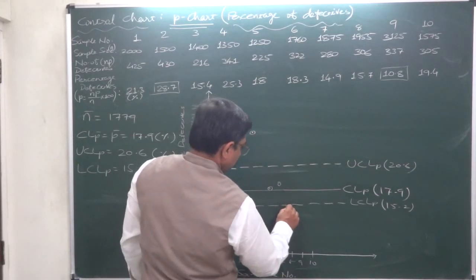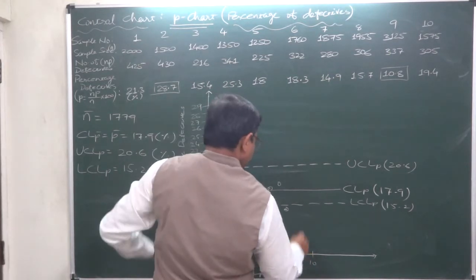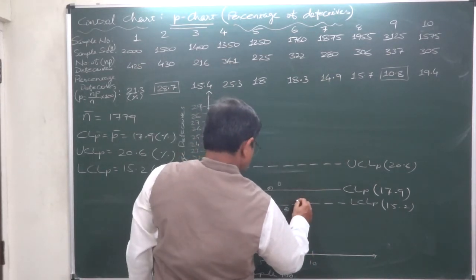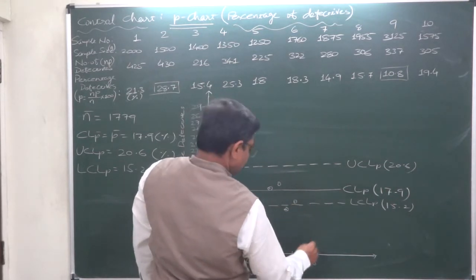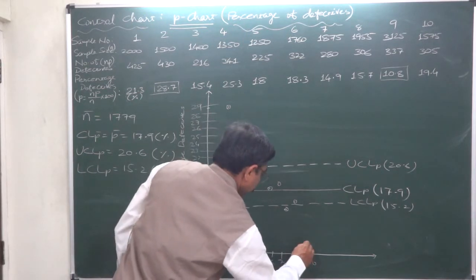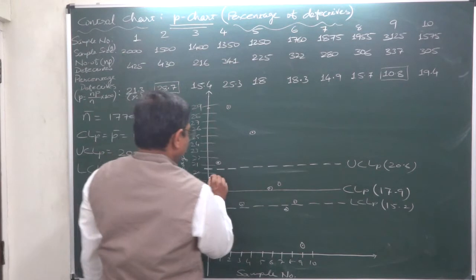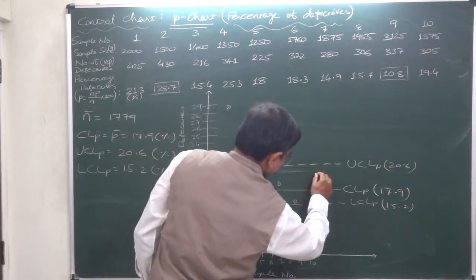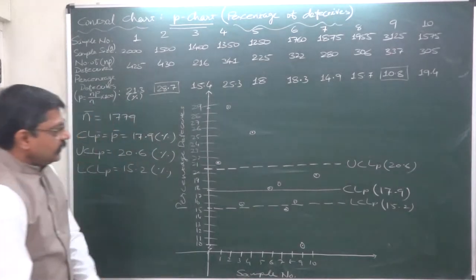Sample number eight is 15.7, slightly above the lower control limit. Sample number nine is 10.8, two millimeters below 11. And sample number ten is 19.4, four millimeters above 19.